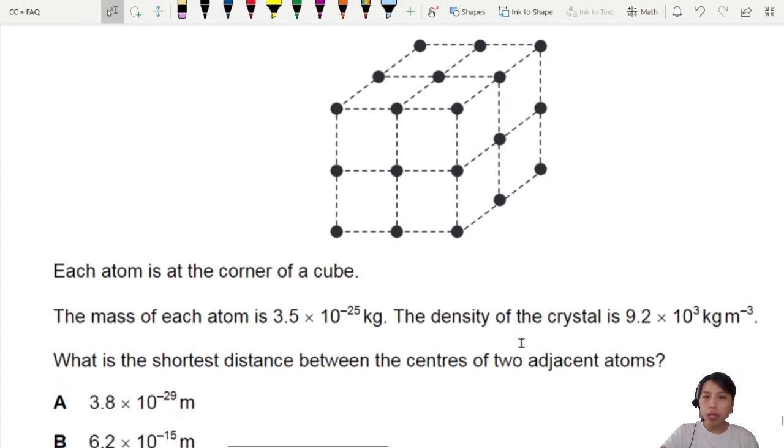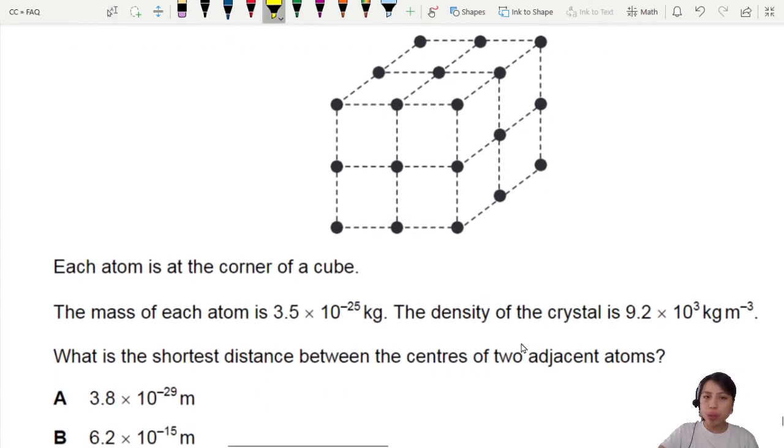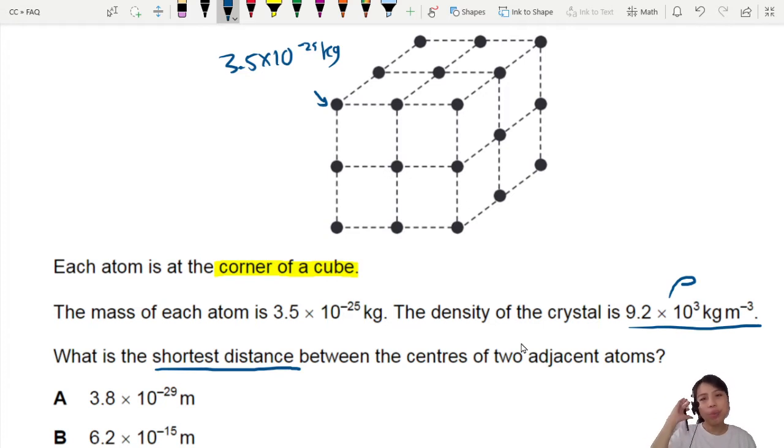Each atom is at the corner of a cube. Now this is a very important clue that we might need to use later. The mass of each atom is 3.5 times 10 negative 25 kg. Really small mass of an atom. The density is given to us. And they ask us, what's the shortest distance between the centers of two adjacent atoms?